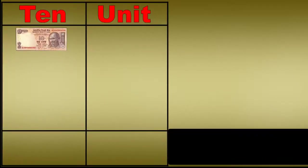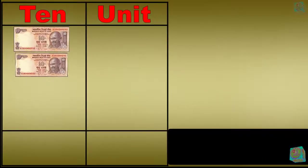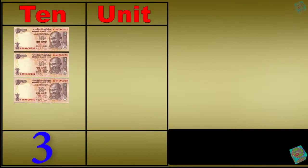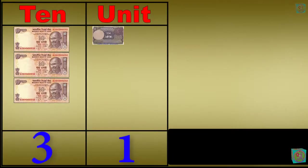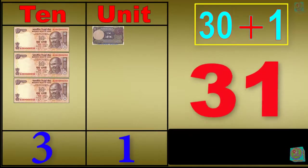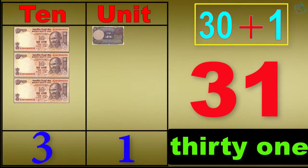1 ten, 2 tens, 3 tens, 3 tens 1 unit. 30 plus 1 equals 31. T-H-I-R-T-Y-O-N-E, 31.